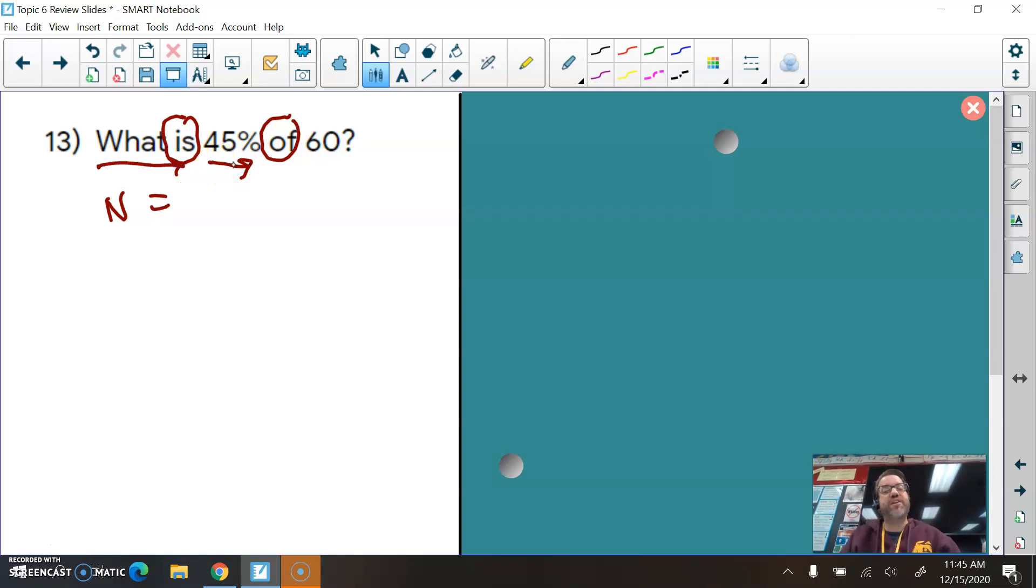45%, we need to change that into decimal form by moving the decimal point two spaces left, and that would be 0.45, or 45 hundredths, of 60, of means times, in math, so times 60. And at this point, then, you may use your calculator to finish this problem. N equals 60 times 0.45, what would that be? That would be 27. So, yep, our answer here is 27. 45% of 60 is equal to 27.